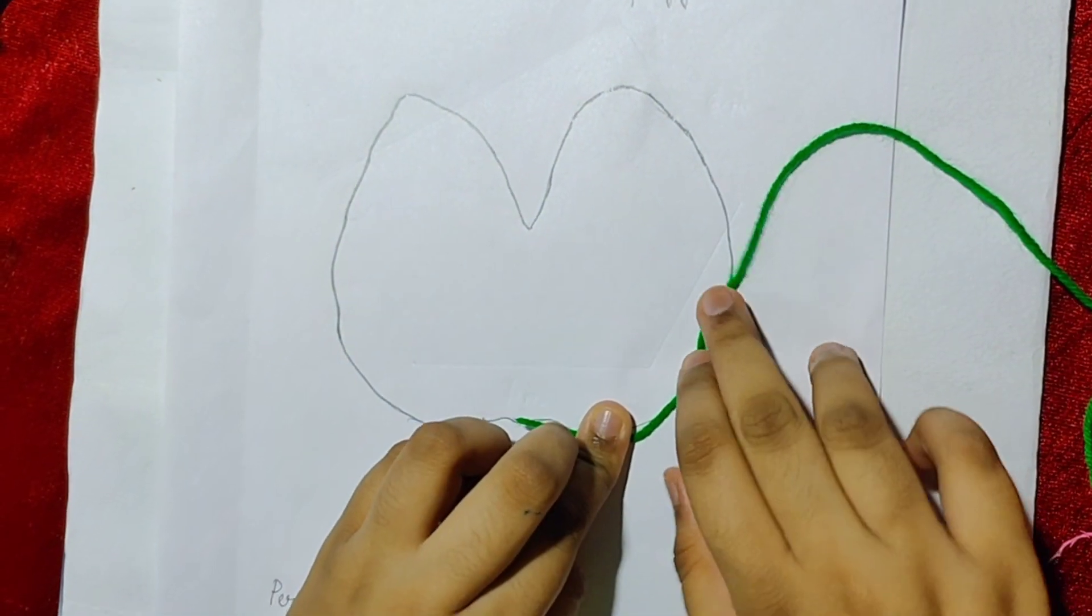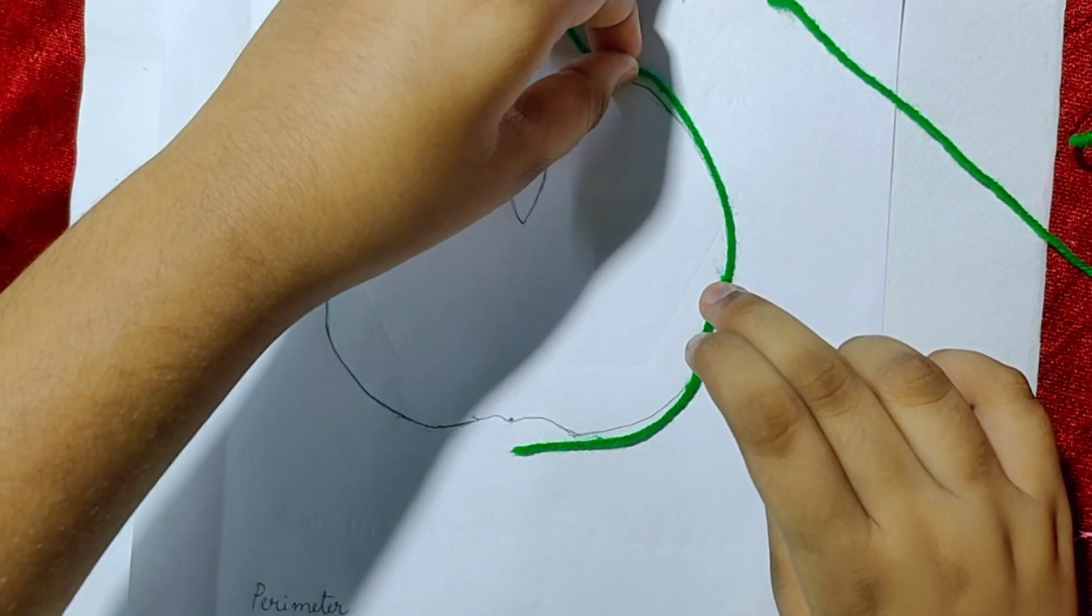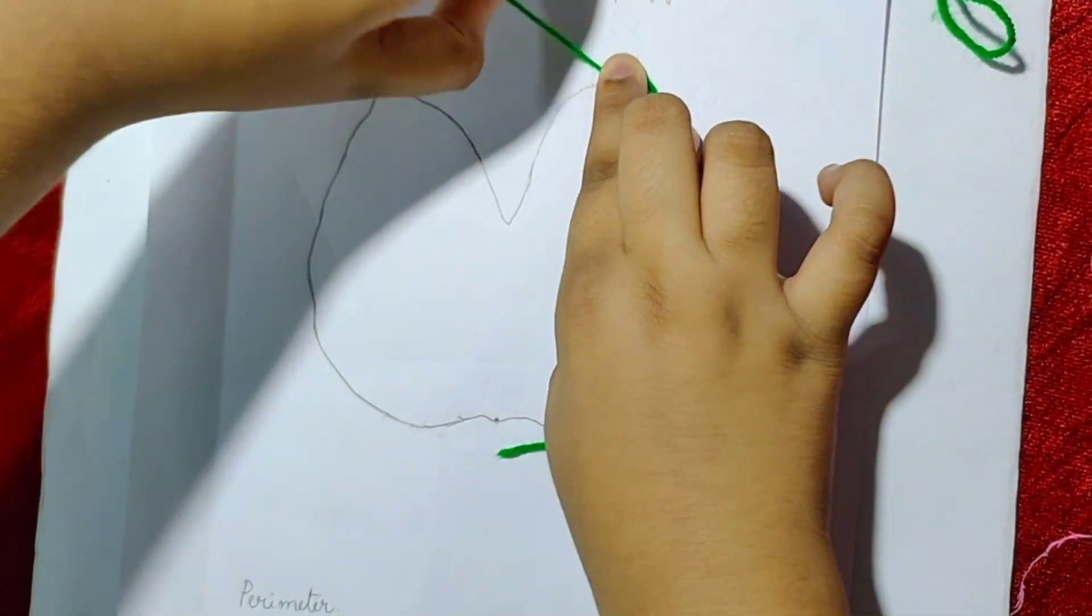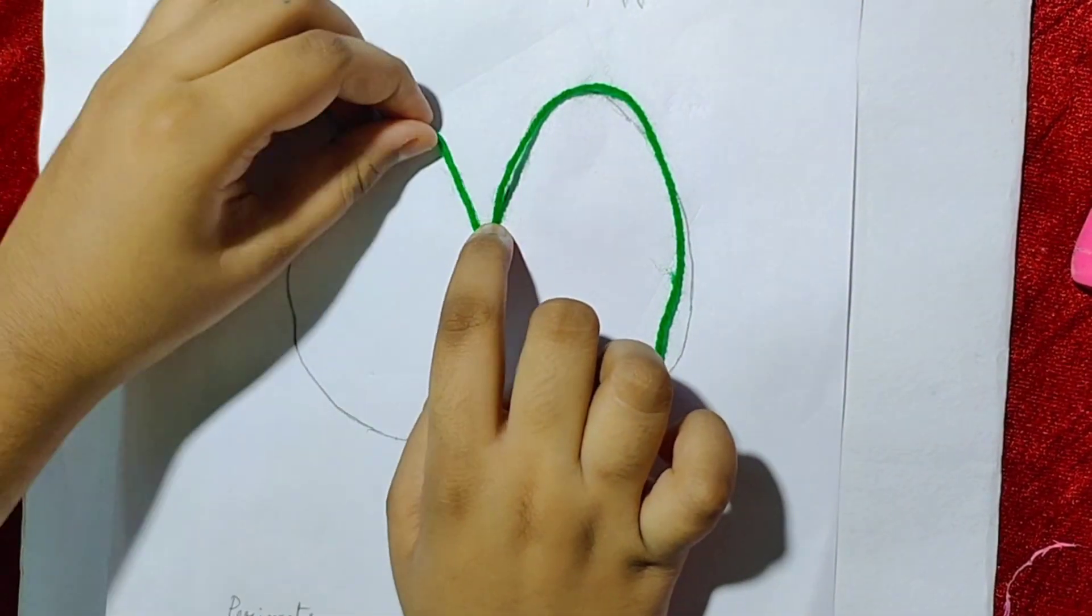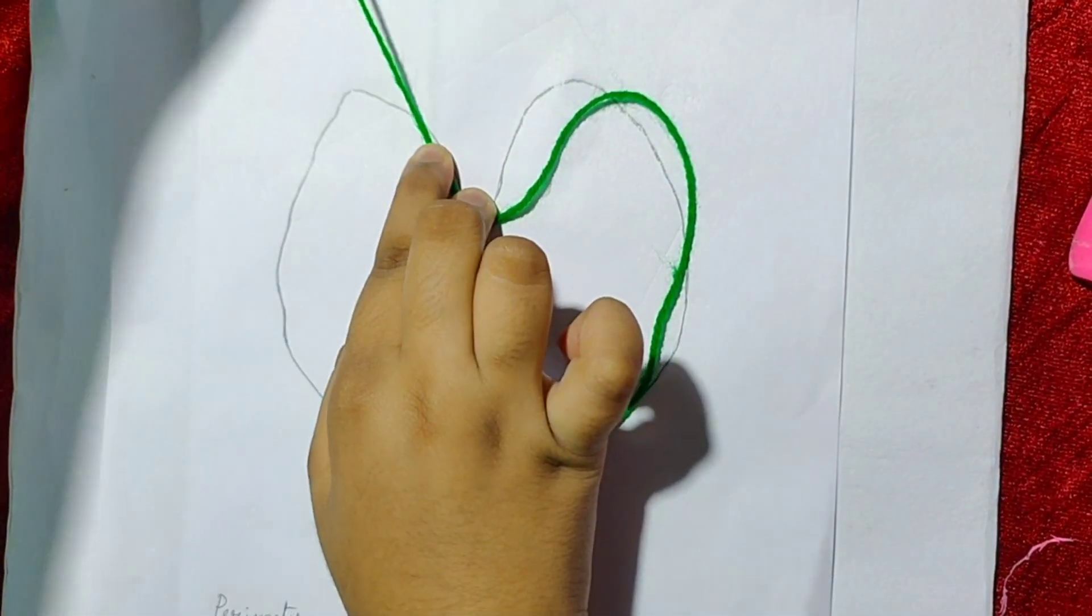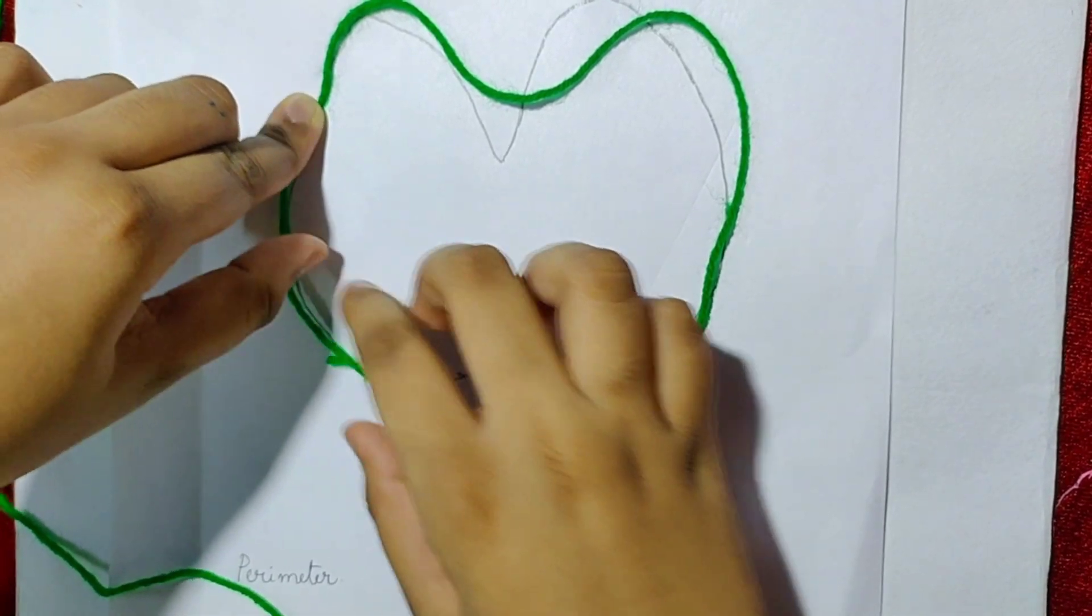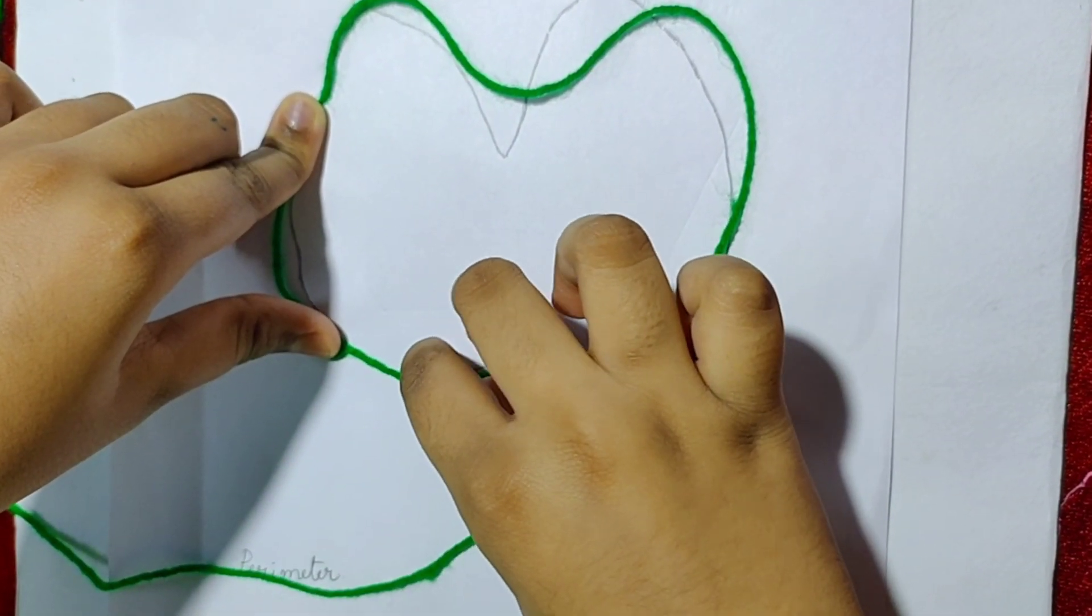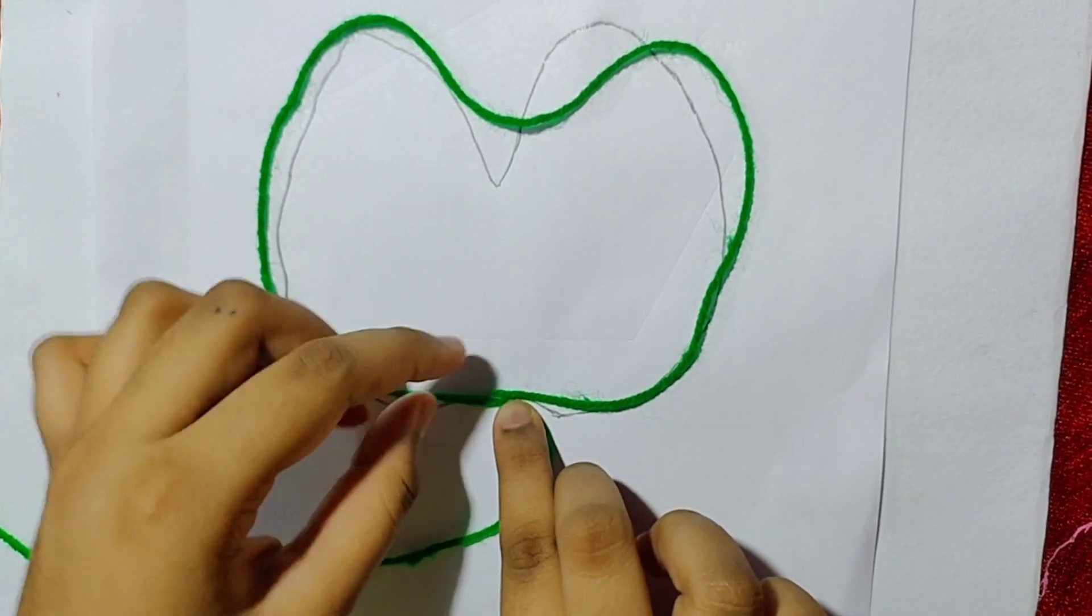Keep it very carefully. We have to keep it on the boundary so that we will get the length of the boundary. It should not go outside the figure. Now this is the end point.